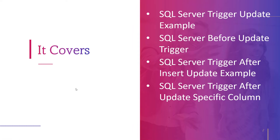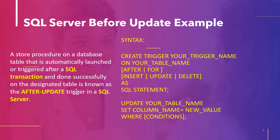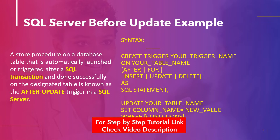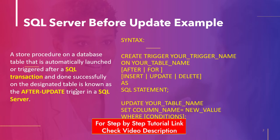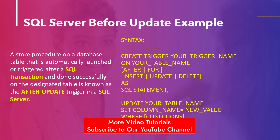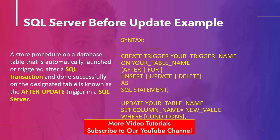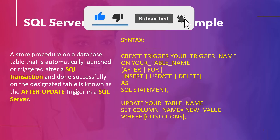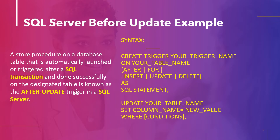In this video we will cover the SQL Server trigger update example. We are also going to cover SQL Server before update trigger and two other topics. Before I explain the SQL Server before update example, you need to understand what the before update trigger is and how it works. A stored procedure on a database table that is automatically launched or triggered after an SQL transaction is done successfully on the designated table is known as an after update trigger in SQL Server.